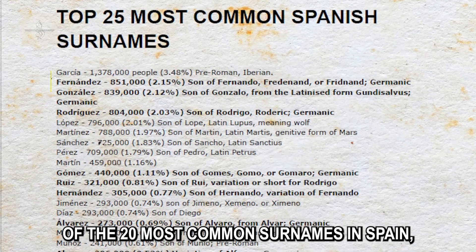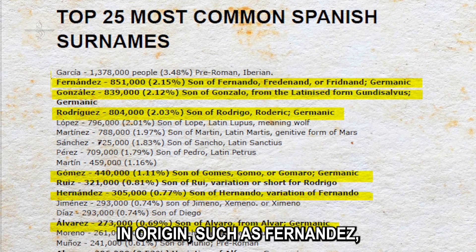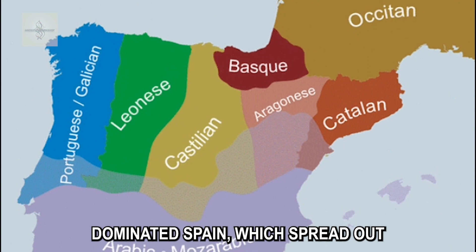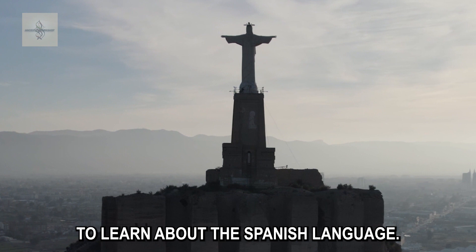Of the 20 most common surnames in Spain, seven are Germanic in origin, such as Fernandez, Rodriguez, and Gonzalez. What's really interesting about the Spanish language is the fact that it originated as a Latin dialect spoken in the northern regions of Muslim-dominated Spain, which spread out and went on to dominate Spain and then the globe. To learn about the Spanish language, we will explore the linguistics of Spain throughout history.